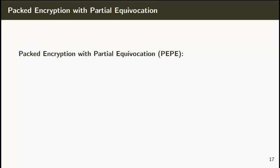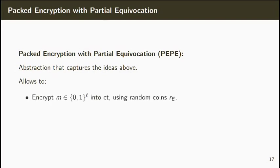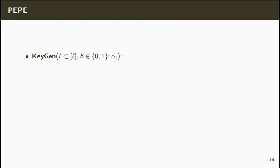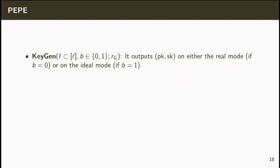Our first contribution is the definition of a new cryptographic primitive which we call PACT encryption with partial equivocation, or PEP for short. This primitive essentially captures the main ideas in the HORR construction. Namely, it allows us to encrypt a message M using random coins RE and later find different random coins RE' such that the encryption of a different message M' coincides with the encryption of M. This holds conditioned on the fact that M' and M differ only in some predefined positions. Formally, a PEP has a key generation algorithm which receives a subset of indexes I and a bit B, and outputs a pair of public and secret keys on either the real mode if B equals 0, or on the ideal mode if B equals 1.